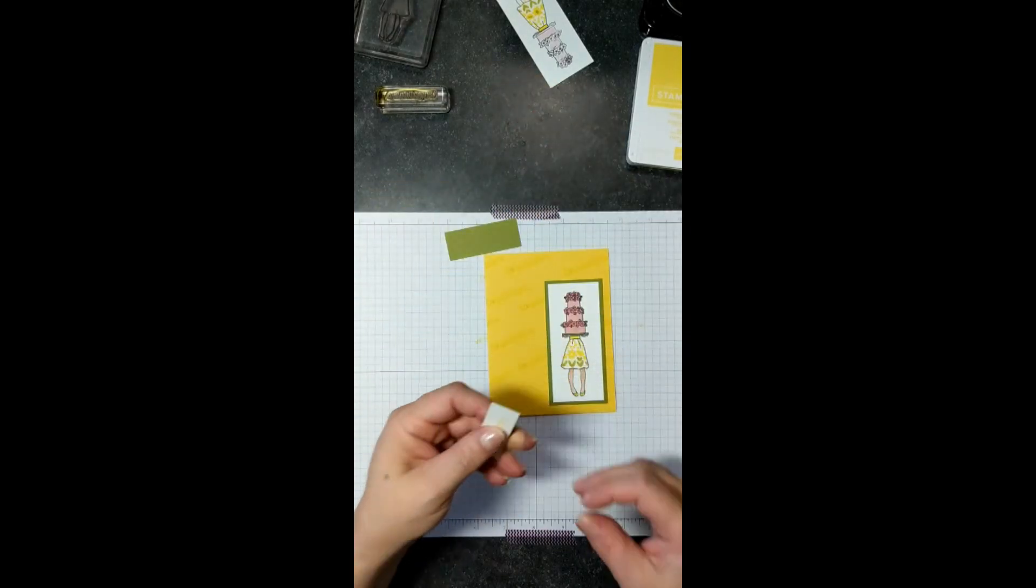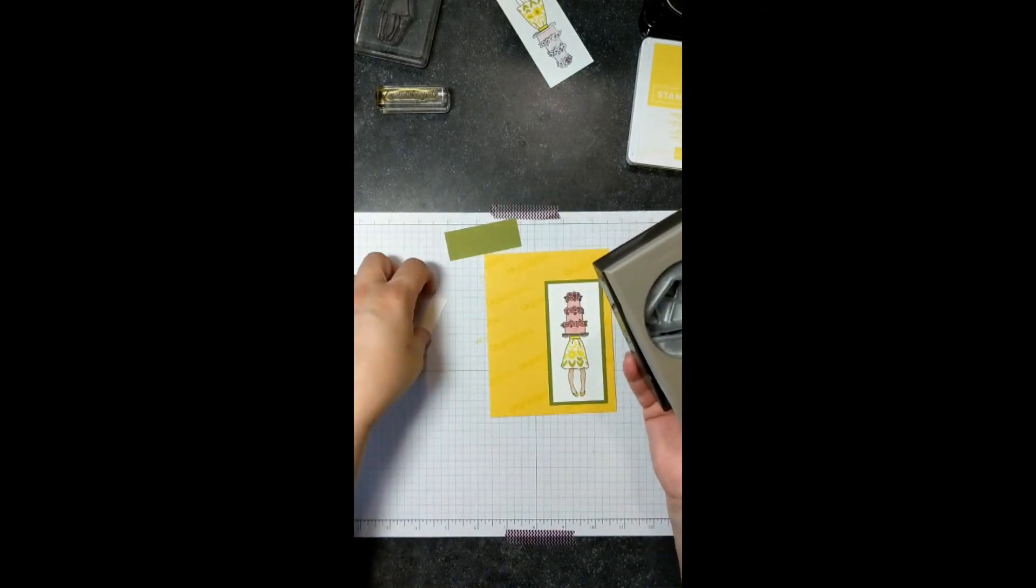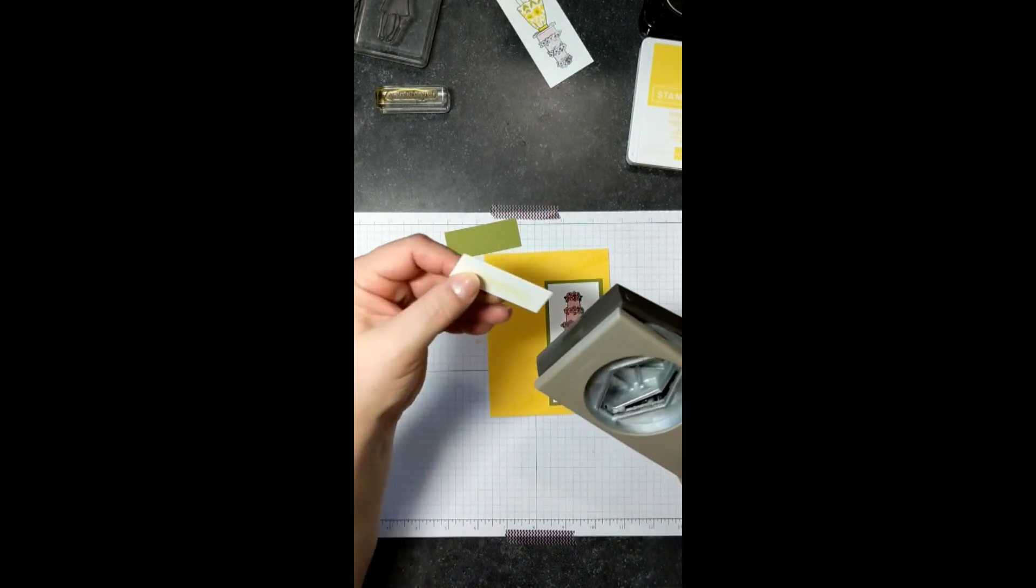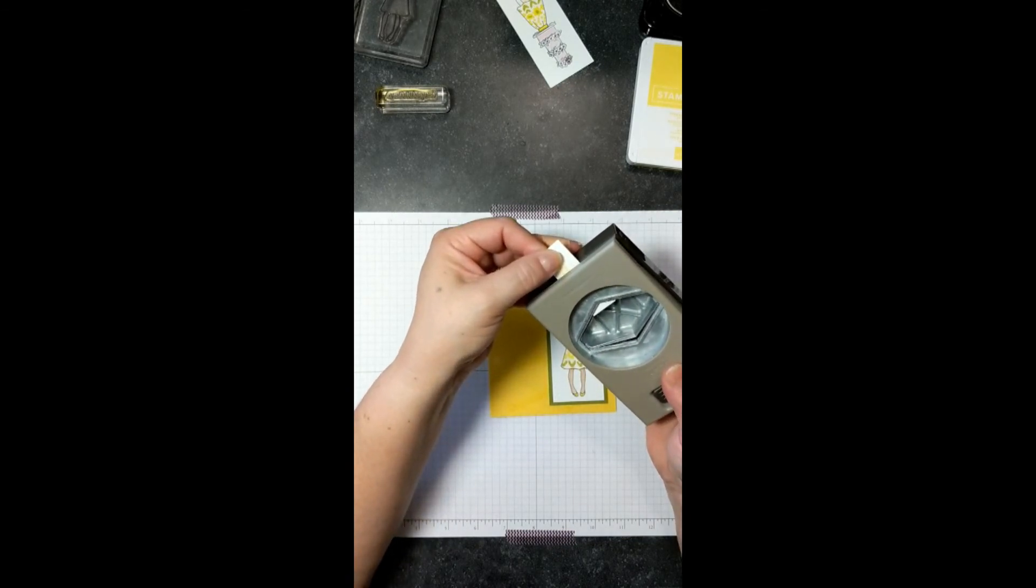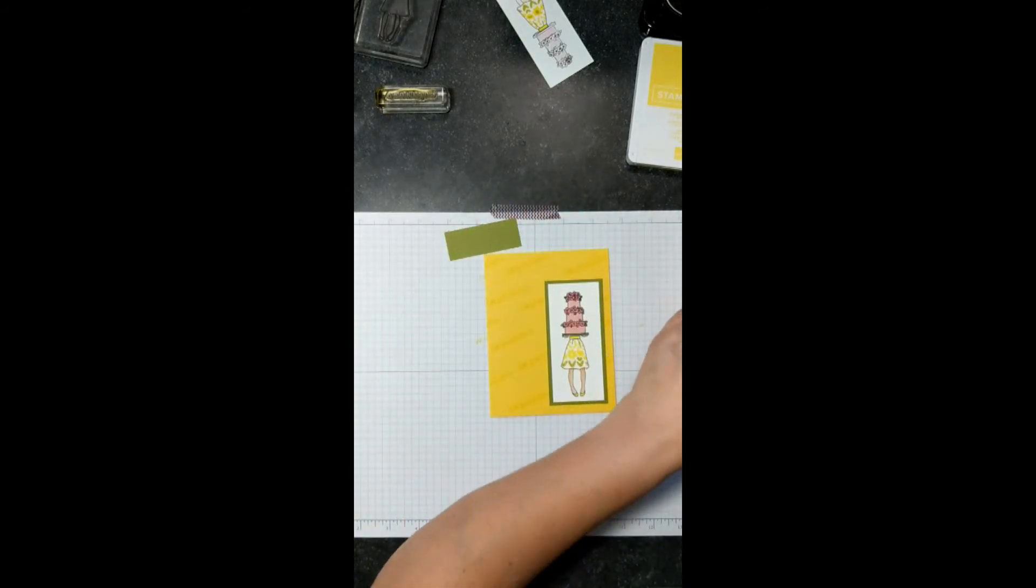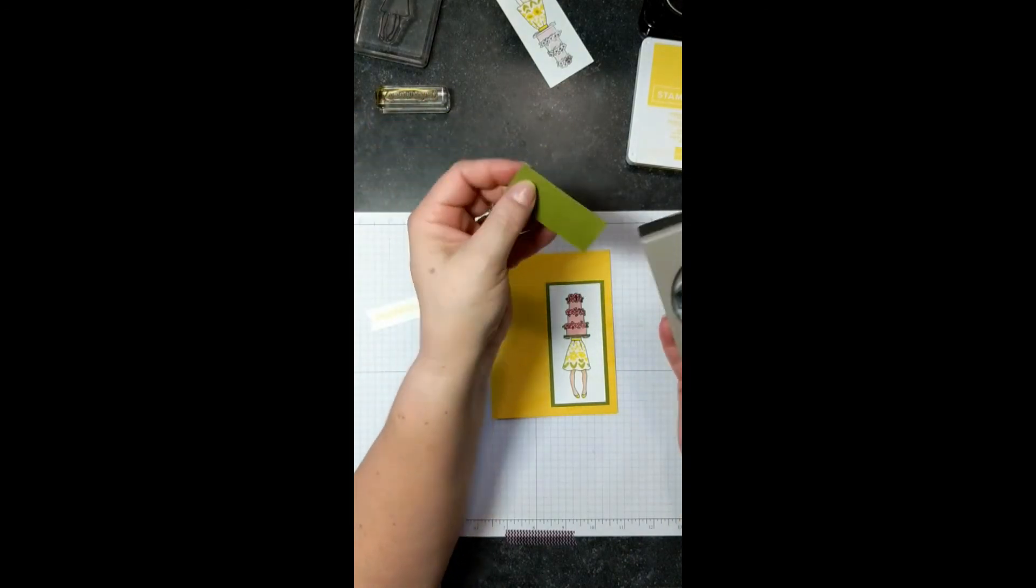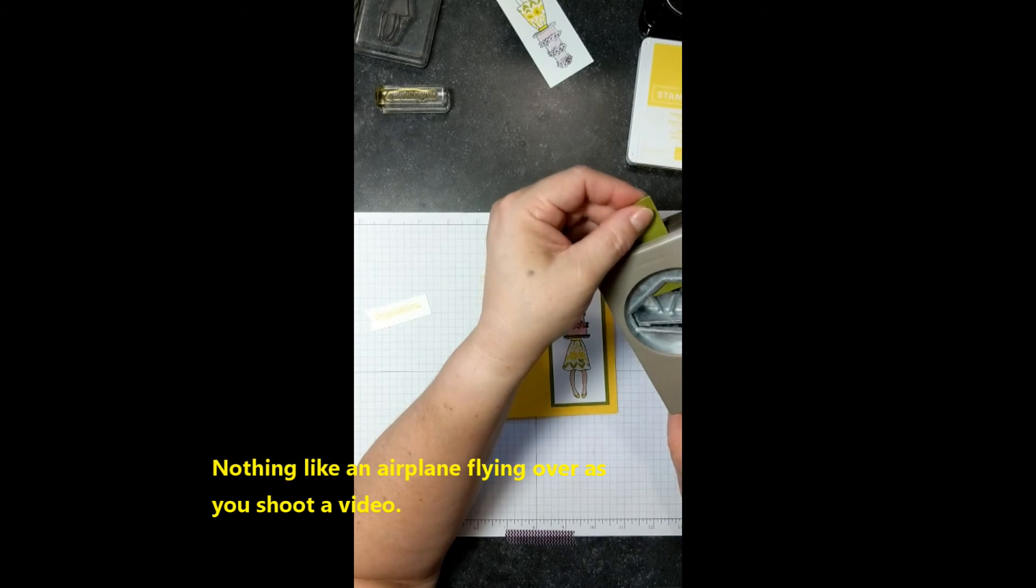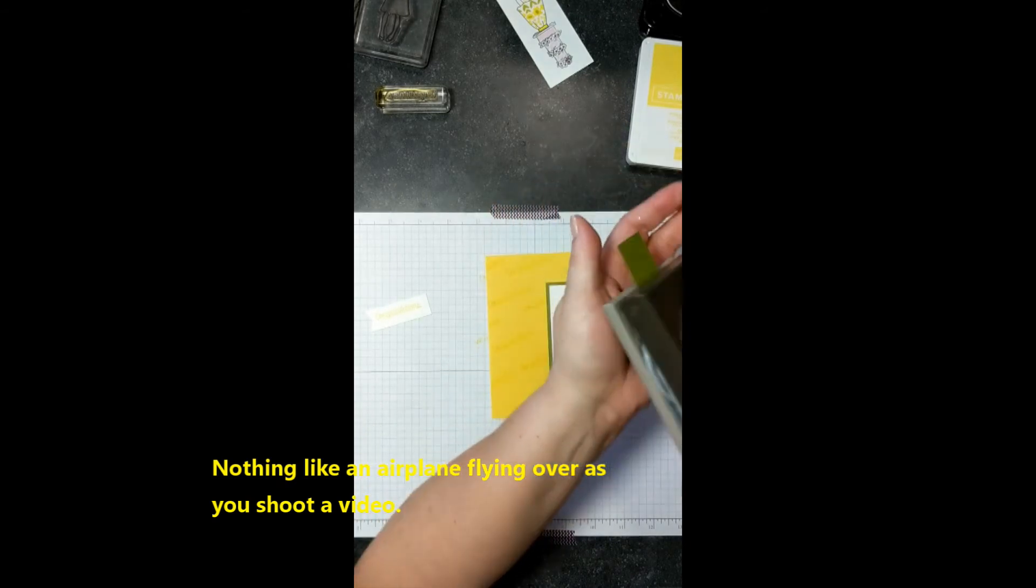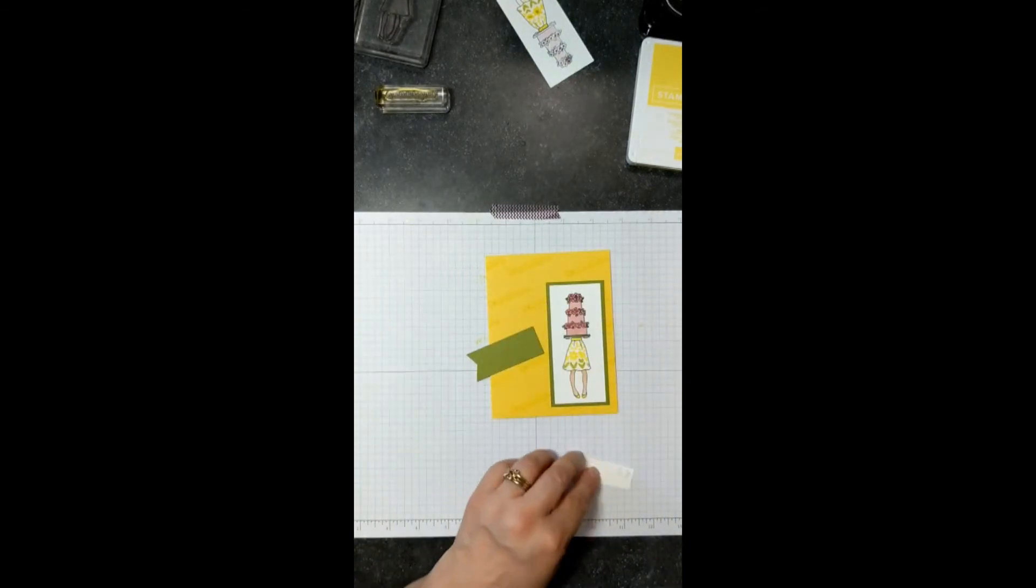Then I want to take... And I've got this punch. It's kind of a hexagon. And I just want to punch my end of my word thing. My sentiment. And make a pennant out of it. My words are getting away from me today. And then I'm going to do the same thing with this smaller piece of Old Olive that we're going to layer onto it. And slide it in. Give it a snip. And now I have my pennant, which is exactly how I wanted it.